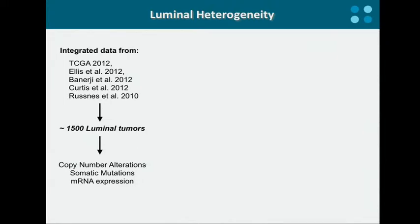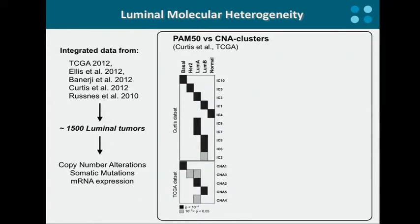The first thing we did was compare the well-established mRNA-driven breast cancer subtypes against copy number-driven clusters identified in different datasets — the Metabrick dataset and the TCGA one. What was quite interesting is that while for basal and HER2-enriched breast tumors there is an almost perfect one-to-one correspondence between these clusters, both luminal A and luminal B are associated with multiple and distinct copy number clusters, suggesting an intrinsic heterogeneity in terms of copy number alteration.